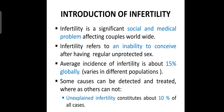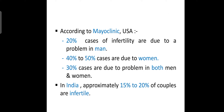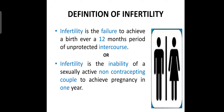According to the Mayo Clinic USA, 20% of cases of infertility are due to problems in men, 40 to 50% of cases are due to problems in women, 30% of cases are due to both men and women, and in India approximately 15 to 20% of couples are infertile. The definition of infertility is the failure to achieve a birth after a 12-month period of unprotected intercourse, or the inability of a sexually active, non-contraceptive couple to achieve pregnancy in one year.